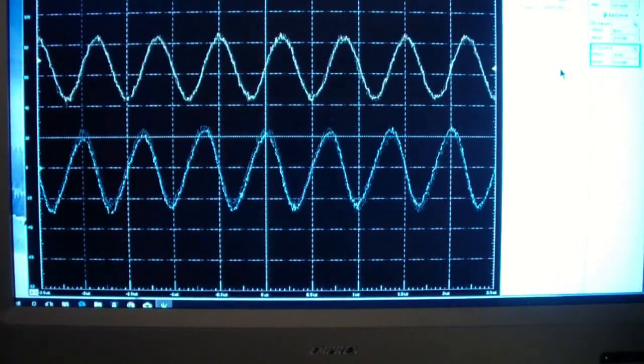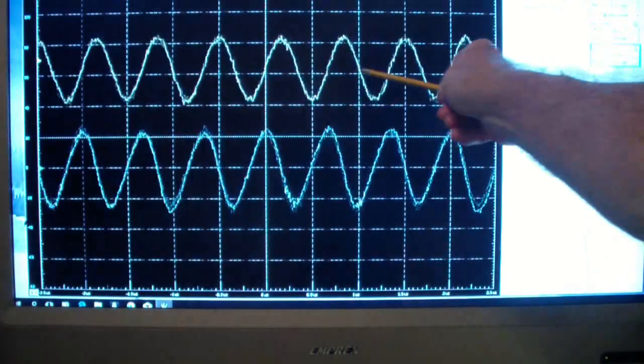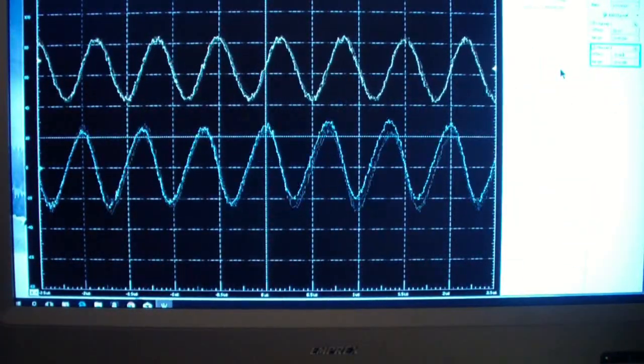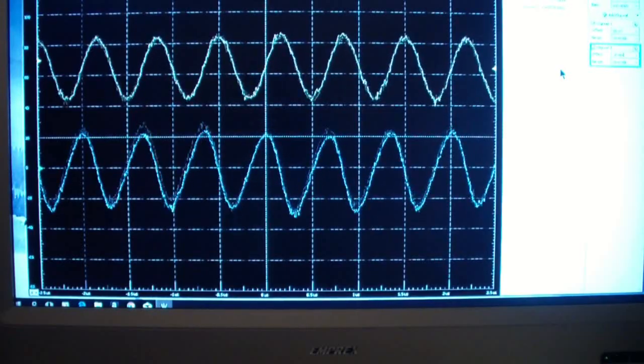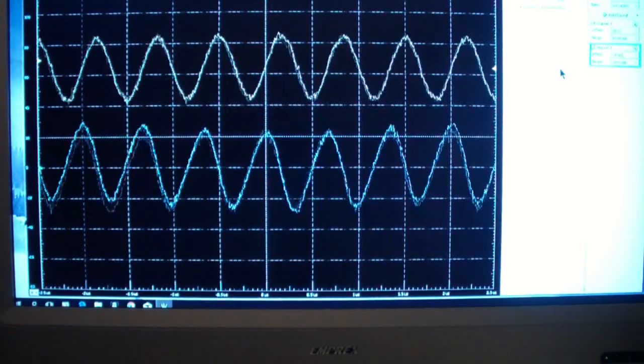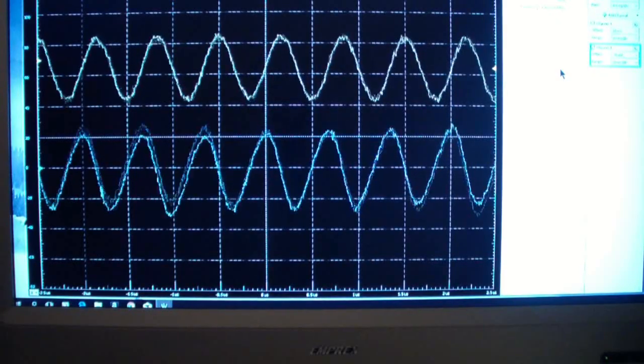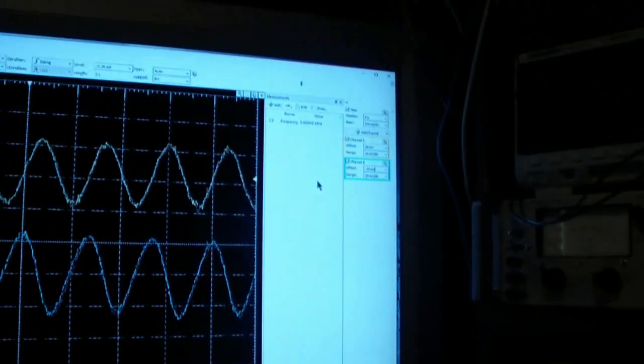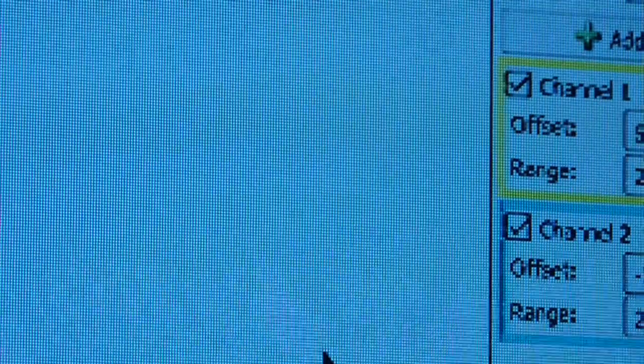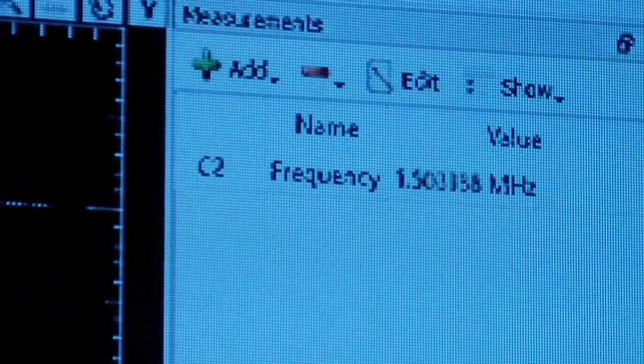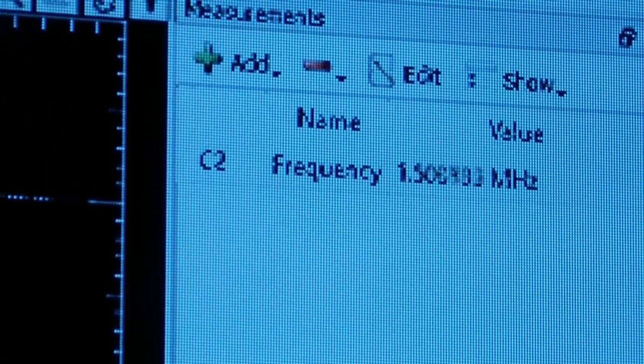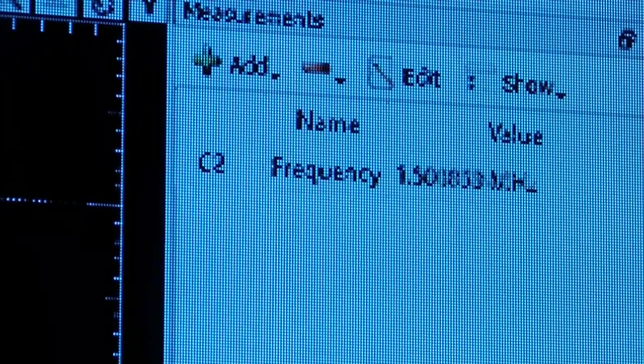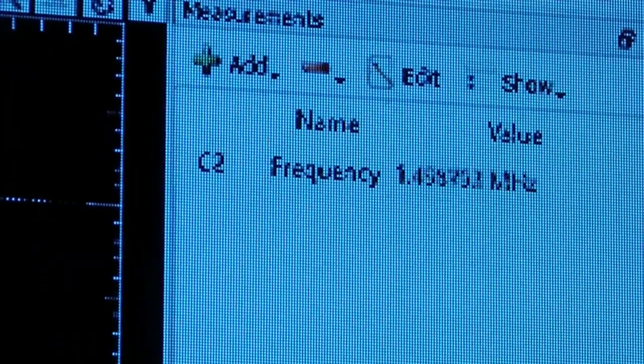Channel 1, the yellow trace at the top, is displaying the input to the amplifier. The trace at the bottom, the blue, is channel 2, and that is displaying the output of the amplifier. You may notice that we have the arbitrary waveform generator set to about 1.5 megahertz. It's approximately the frequency of oscillation. For these purposes, all we are trying to do is verify the gain of the stage.